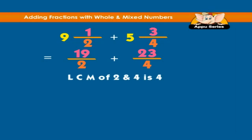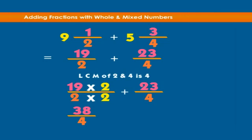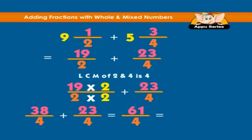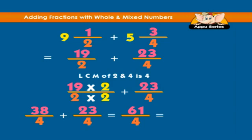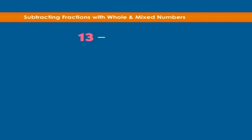So we have nineteen multiplied by two over two multiplied by two, plus twenty-three over four, which is thirty-eight over four plus twenty-three over four, which equals sixty-one over four. Converting back to a mixed number, we have sixty-one over four equals fifteen and one-fourth.